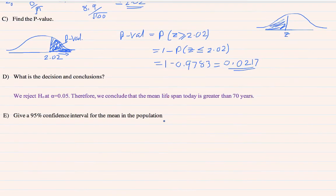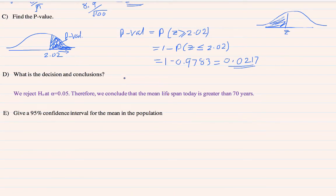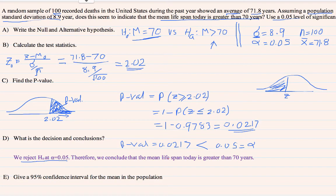Then, asking what is the decision and conclusion? To get the decision, we should compare p-value with alpha. Let me explain p-value. Actually, this one 0.0217 and alpha 0.05, the level of significance, alpha. You see 0.05 is always greater than p-value. It means, we reject H₀, we reject H₀ at alpha equal 0.05. H₀ is rejected. What is the meaning of this? It means this H₀, this is not true, this is rejected. It means, we should go with this. Therefore, we can conclude that the mean life span today is greater than 70 years.